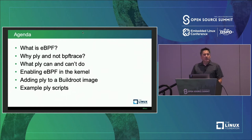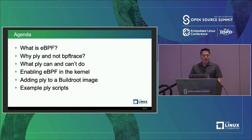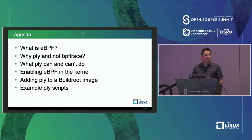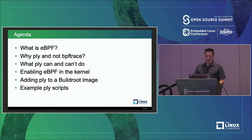The agenda for today: first, I'm going to explain what eBPF is. Then I'm going to talk about the tool Ply and why you want to use that on an embedded system instead of BPF Trace. Then I'm going to show you what Ply can and can't do. After that, I'll show you how to enable eBPF in a Linux kernel, add BPF to a Buildroot image for the BeagleBone Black, and give you examples of the kinds of scripts you can write in Ply.